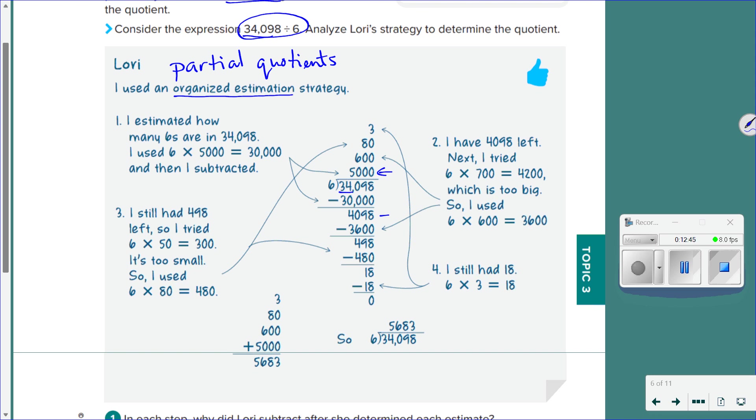So she's using the whole 5,000. 6 times 5,000 gave her 30,000. She takes it away and she gets 4,098. Then she says, okay, well, it's going to go into 4,000. I've got 6. It's going to go into 4,000 probably about 600 times. So she does 600 times 6 and gets 2,600 and takes that away. So she's now multiplied this one. That was there. This one is here. And has 498 left.